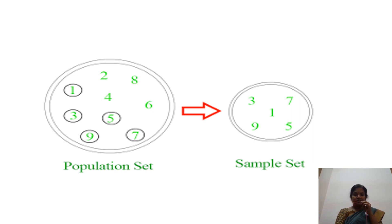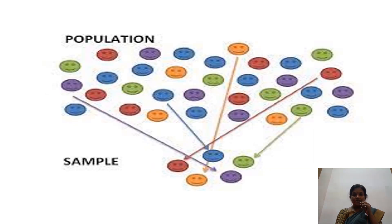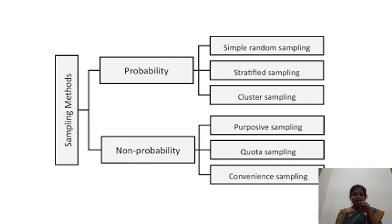Here the population is a very huge area. The small part of the population will be the sample set. In sampling method, there are two wider areas: probability and non-probability sampling. In probability sampling, the important types are simple random sampling, stratified sampling, and cluster sampling. Non-probability sampling includes purposive sampling, quota sampling, and convenience sampling.